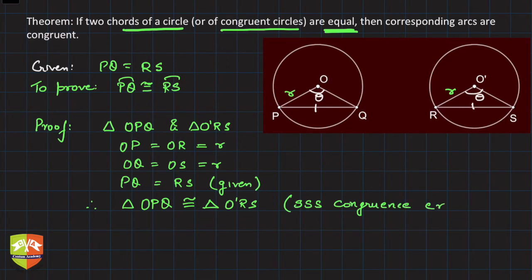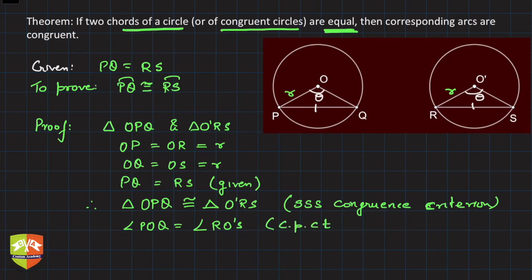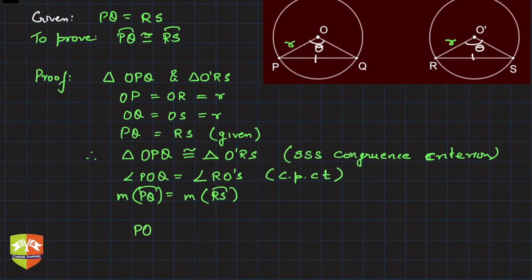So then what do we infer? Angle POQ will be equal to angle RO'S, the reason being corresponding parts of congruent triangles. Hence, if angle POQ equals angle RO'S, that means the degree measure of arc PQ is equal to the degree measure of arc RS. When degree measures are the same, we know that the arcs are congruent, so arc PQ is congruent to arc RS.